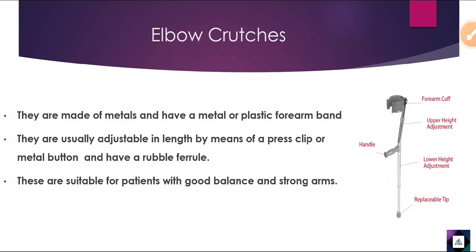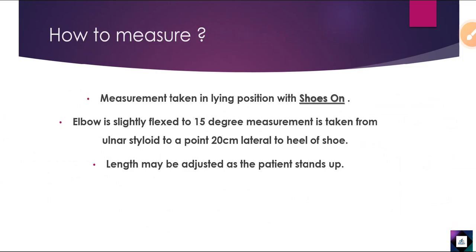Elbow crutches are given to those with good balance and strong arms, while axillary crutches are given to those without good balance or adequate strength — or for temporary use after an accident. For elbow crutches, shoes on is the more accurate measurement method, with 15 degrees of elbow flexion and 20 cm lateral to the heel of the shoes. Length is adjustable according to the patient.